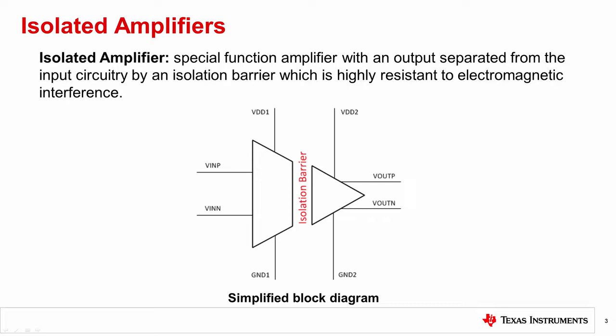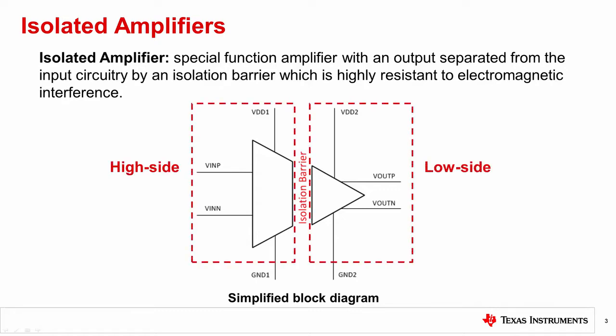The purpose of the isolated amplifier is to provide protection against electrical shock hazards in high voltage applications, or to isolate parts of circuits or different circuits from each other by breaking the ground loops. So what is the difference between an isolated and non-isolated amplifier?